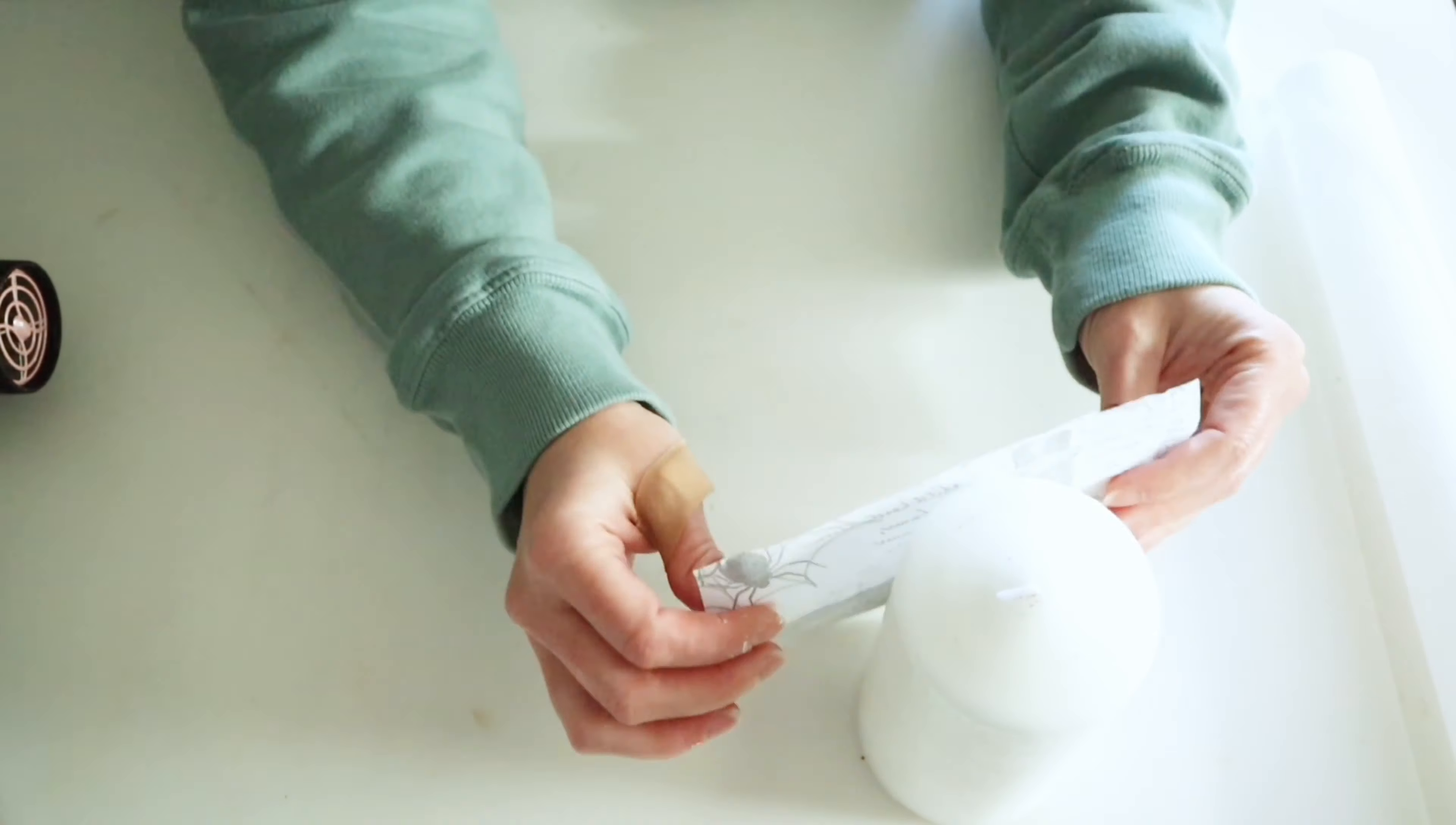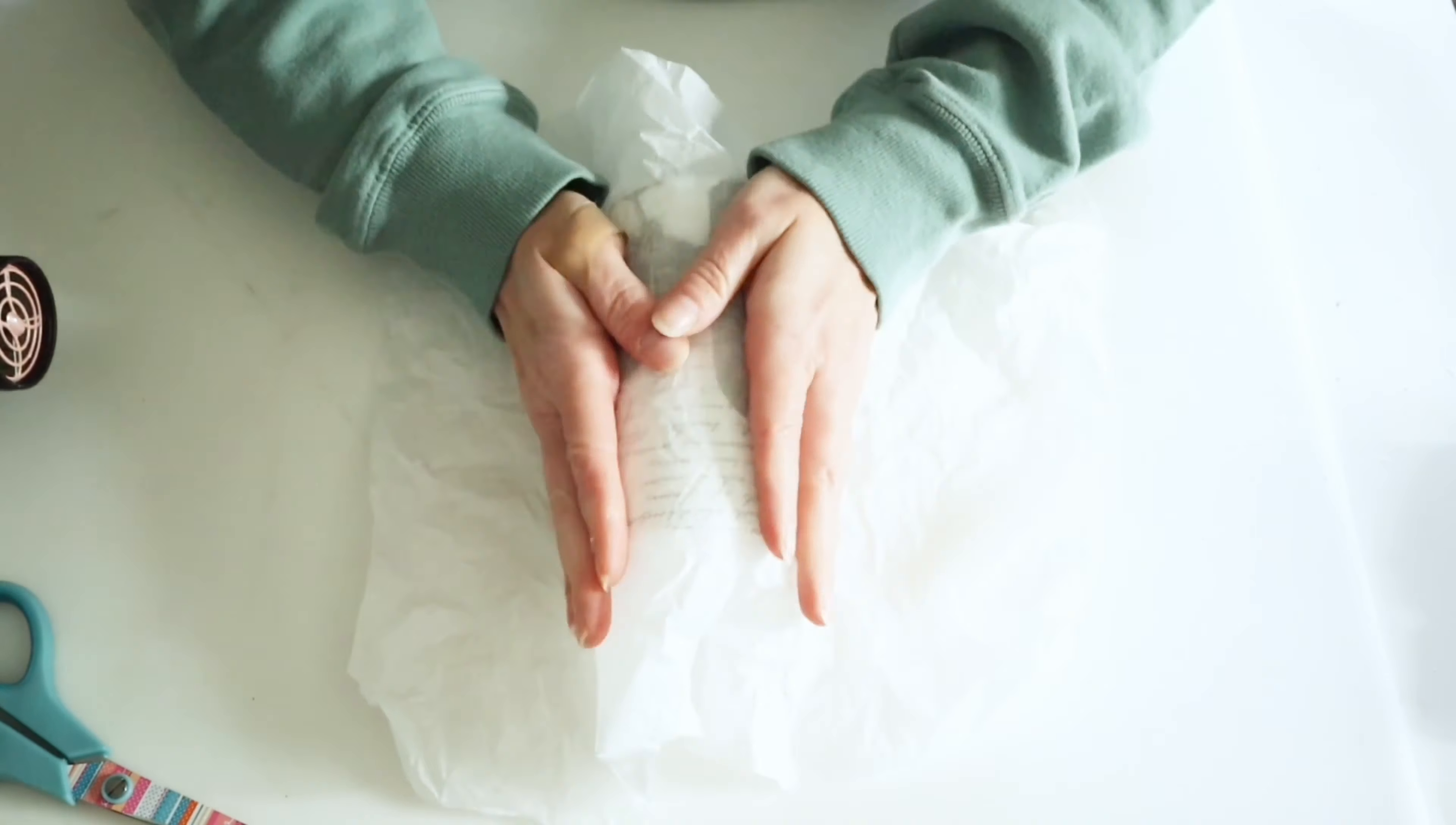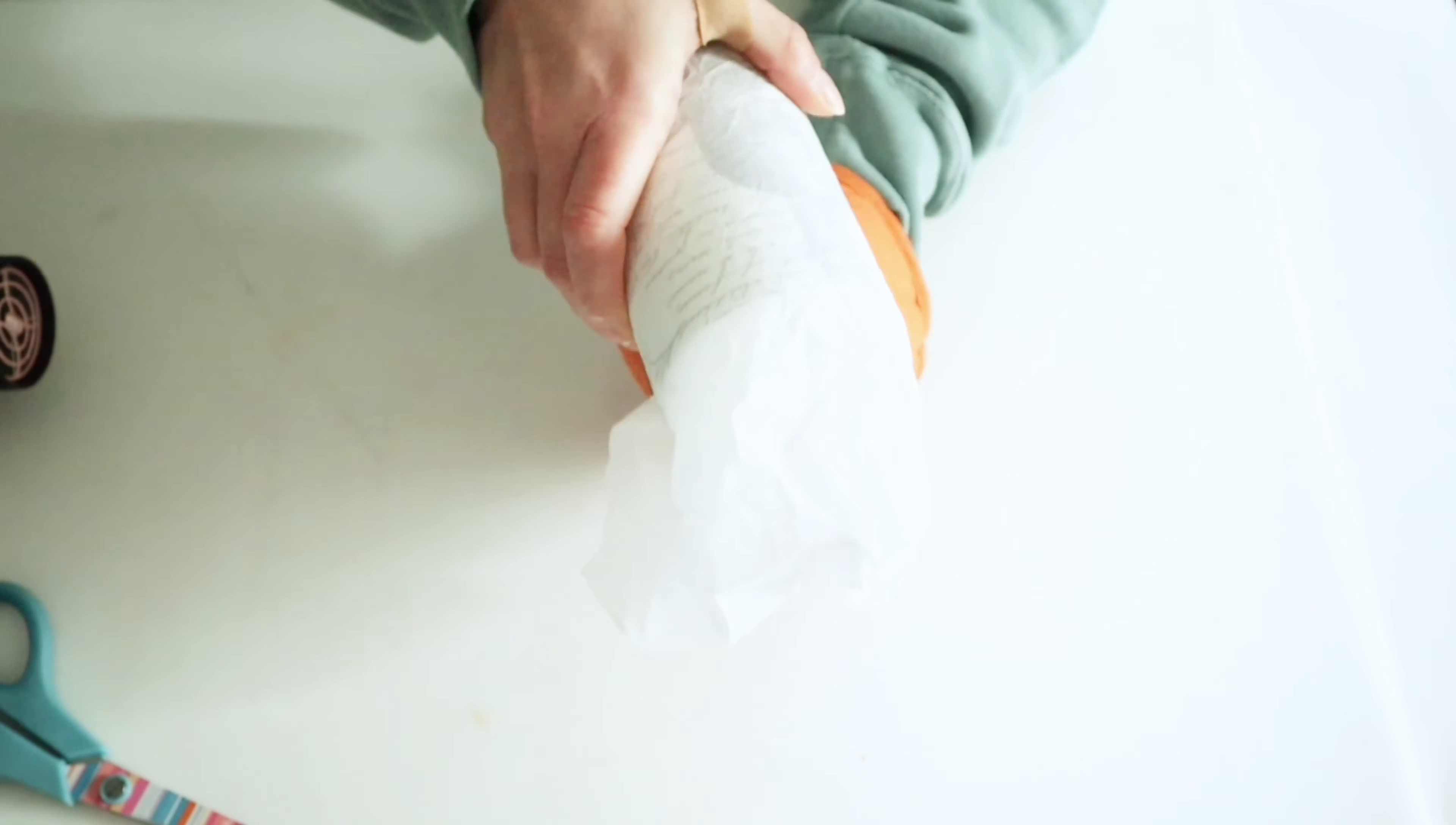Then you're going to go ahead and take the second ply off of this napkin and place it around your candle. Then you're just going to place your wax paper over top of that and do be careful because this is going to get hot.